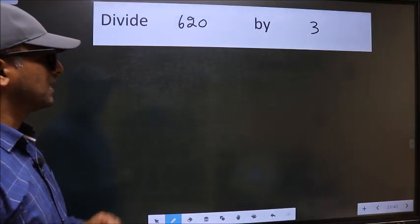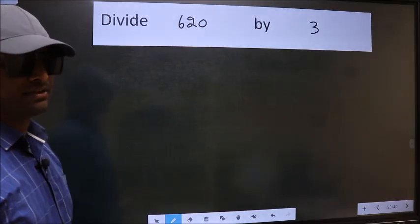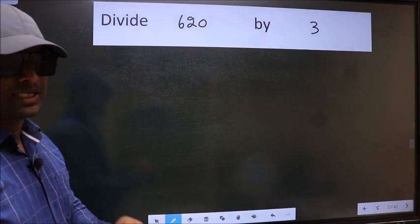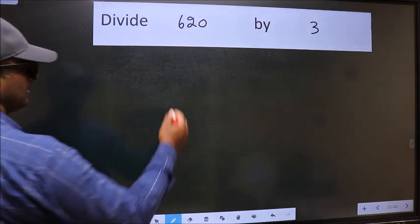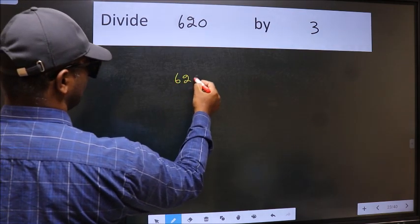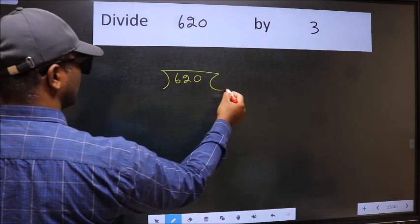Divide 620 by 3. To do this division, we should frame it in this way. 620 here, 3 here.